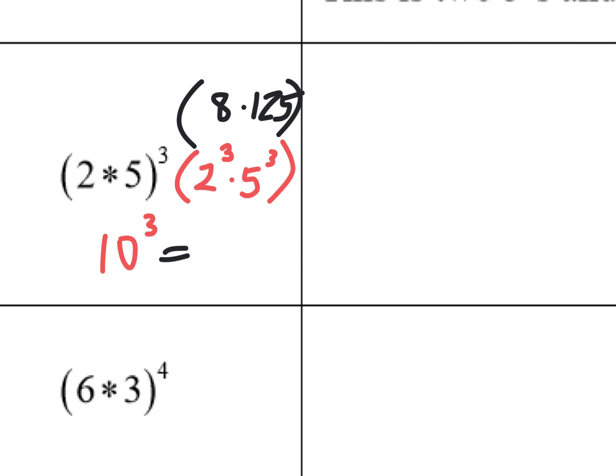What is five to the third? 125. The question is, is that the same as ten to the third? Well, what's ten to the third? Thousand. Is that the same as eight times 125? Yes. Interesting. So you could do it that way.